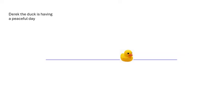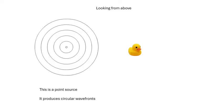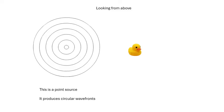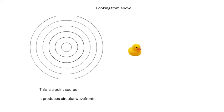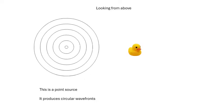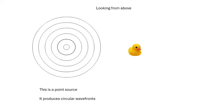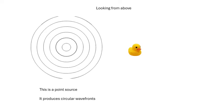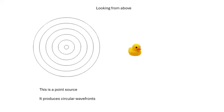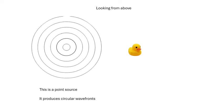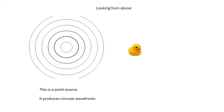There's Derek the duck, and he's sat on the water having a very peaceful day, having a bit of a snooze. Now here is a point source producing water waves. This point source might be somebody dipping their finger in the water, or throwing stones in the water, but it's producing circular wave fronts. We see the waves travelling out from the point source.